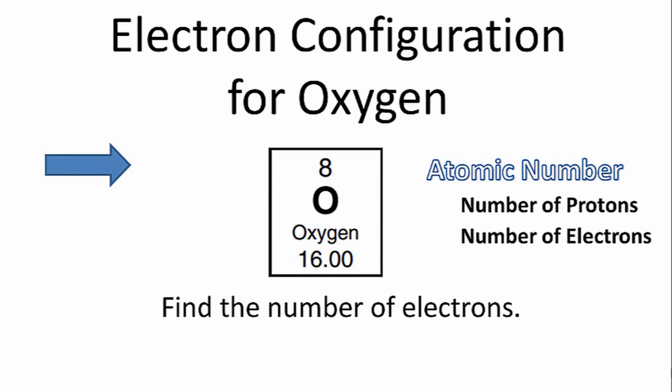To find the electron configuration for oxygen, we'll first look at the periodic table to find the number of electrons. We can do that by looking at the atomic number.